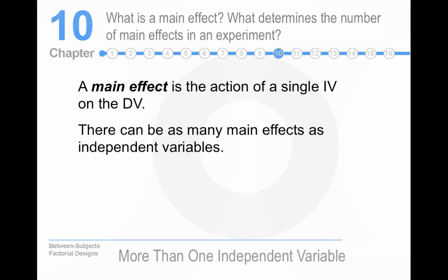So the main effect is the action of a single independent variable on the dependent variable. There can be as many main effects as independent variables. So if we have a study with three independent variables, we would have three main effects. Four independent variables, you have four main effects. So two independent variables, you'd have two main effects.